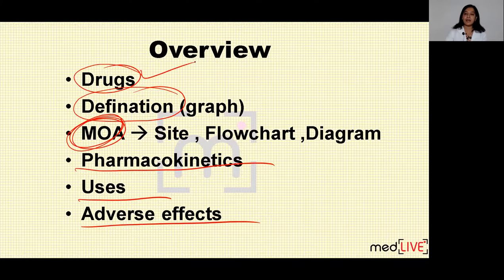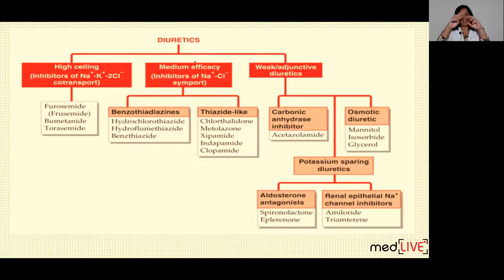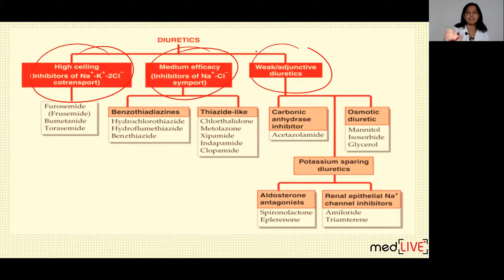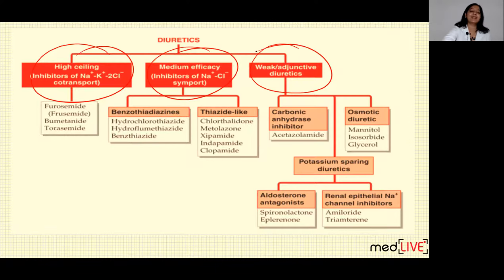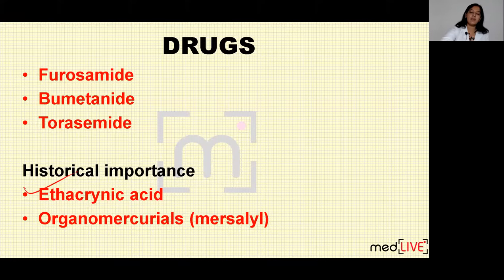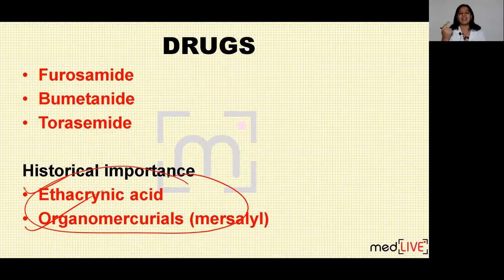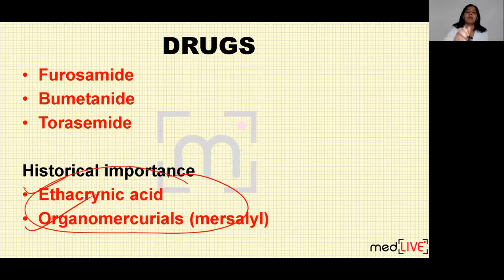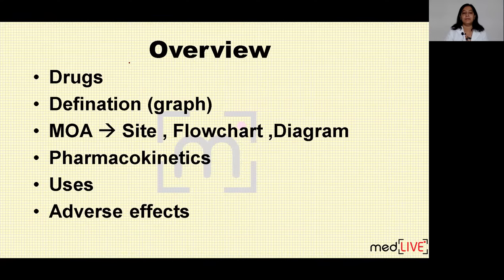First, the drugs which come under this category — loop diuretics. High ceiling diuretics contains three drugs: furosemide, bumetanide and torsemide. Previously, there were two more drugs in this category — ethacrynic acid and organic mercurial. But these two drugs are banned nowadays because of their severe ototoxicity. So there are three drugs in this category: furosemide, bumetanide and torsemide. Furosemide is the prototype drug here.